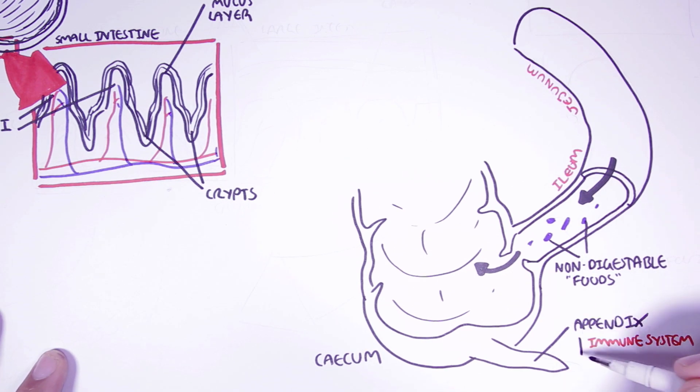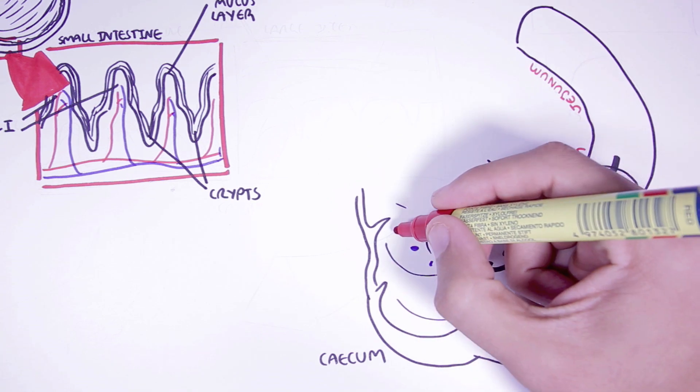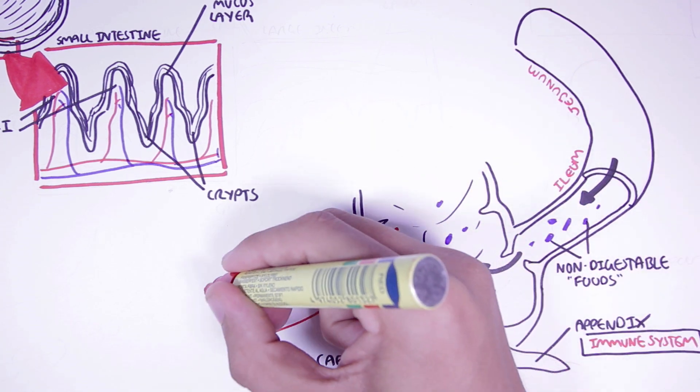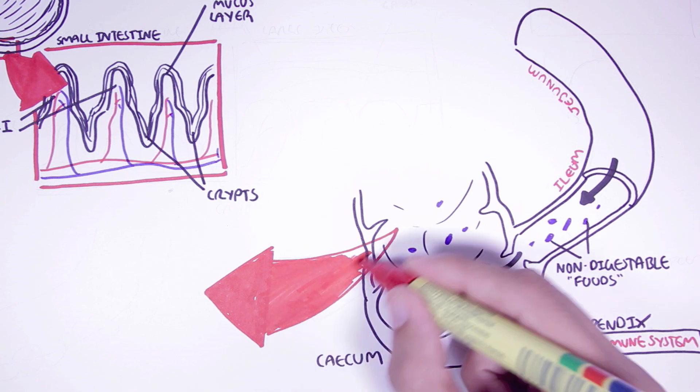What most people may not know about the large intestine, in particular the proximal area of the large intestine, so I'm talking about the cecum, is that a lot of these non-digested foods undergo fermentation by the trillions of bacteria that live here. So let's have a look at what happens.